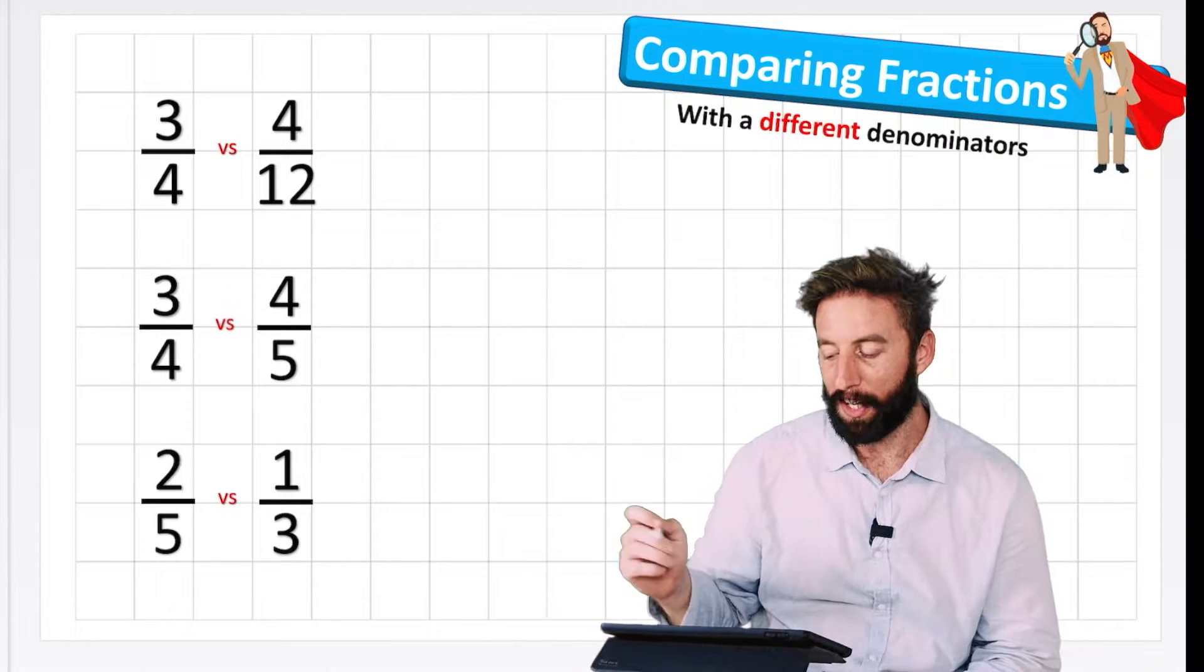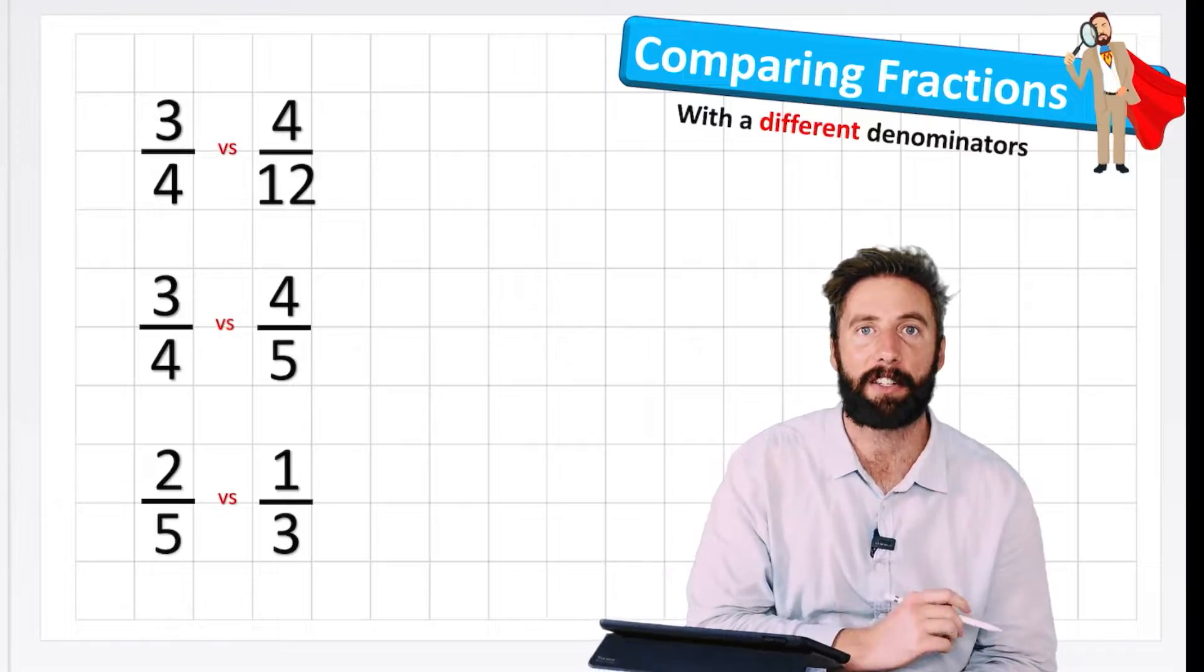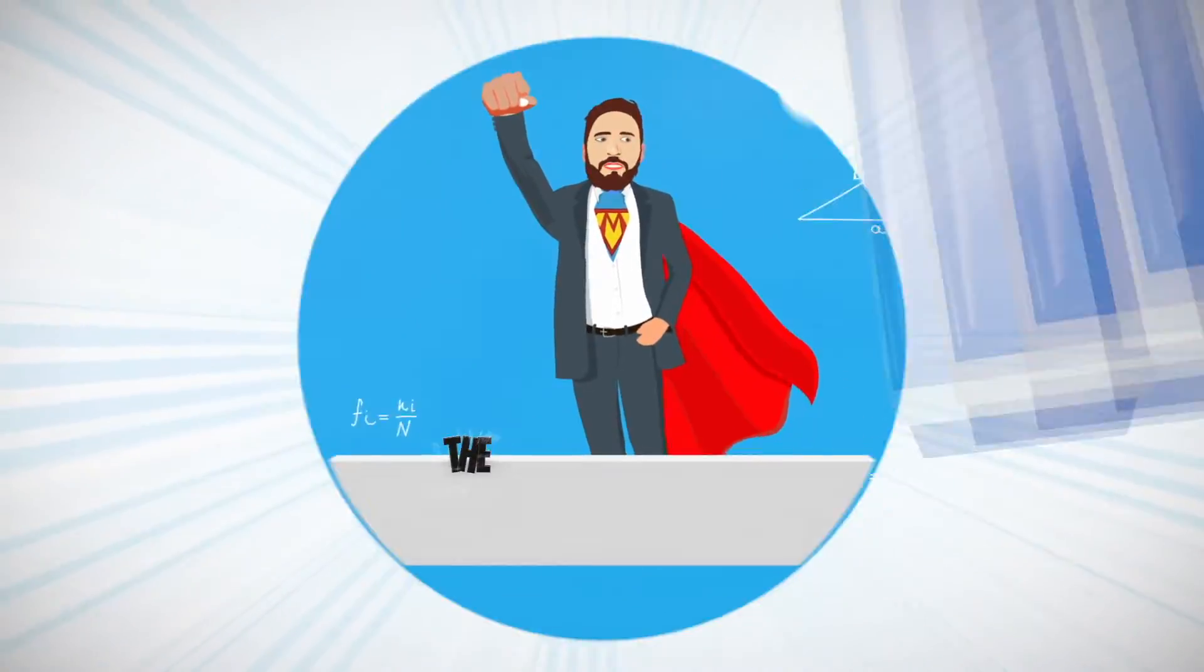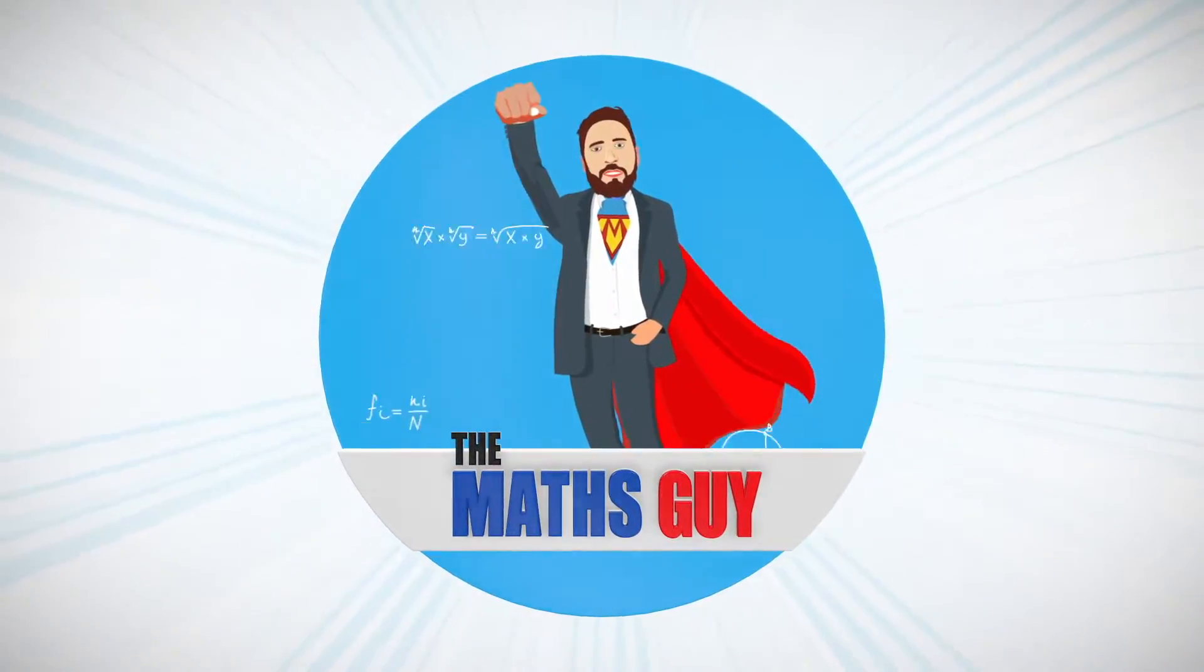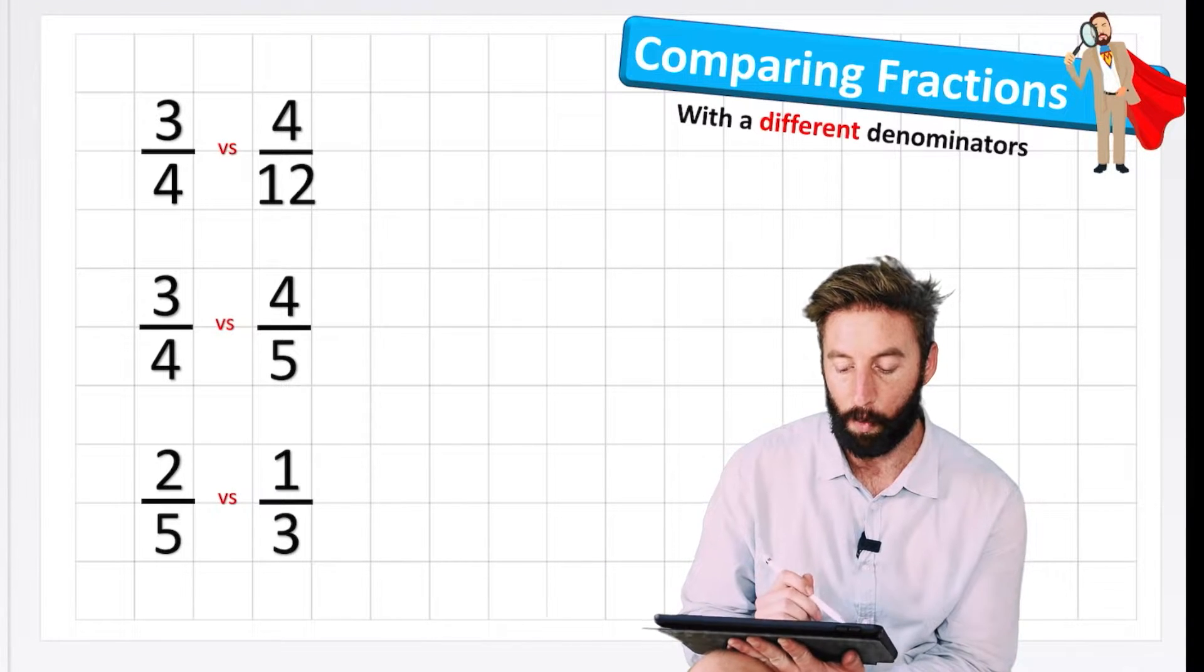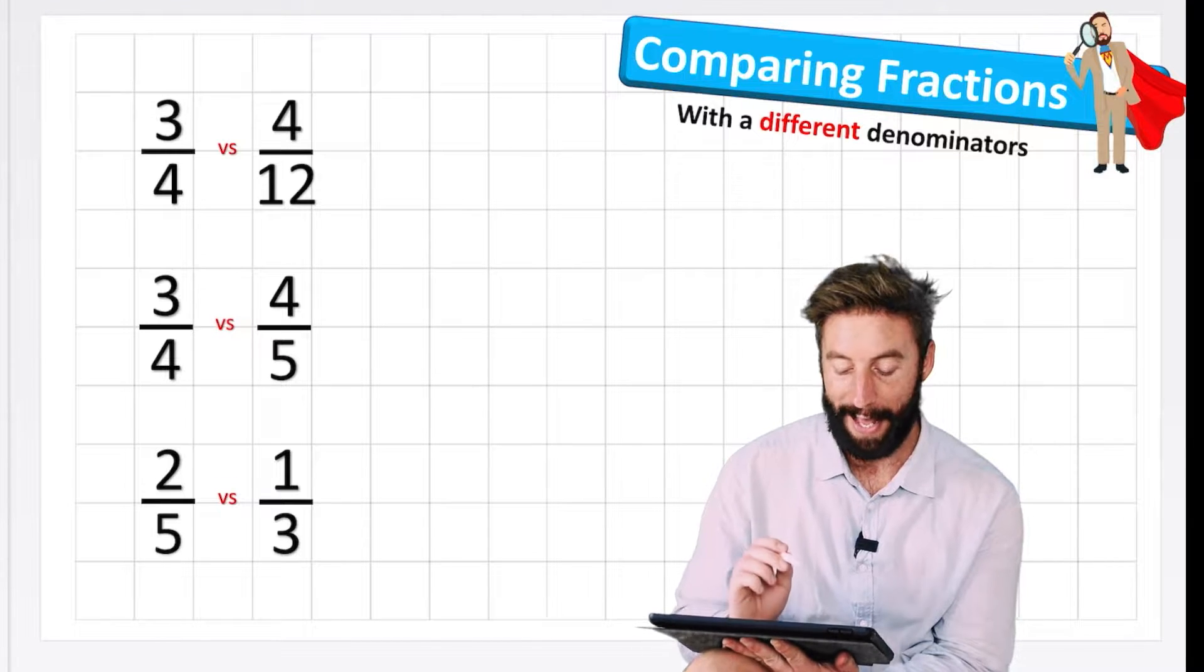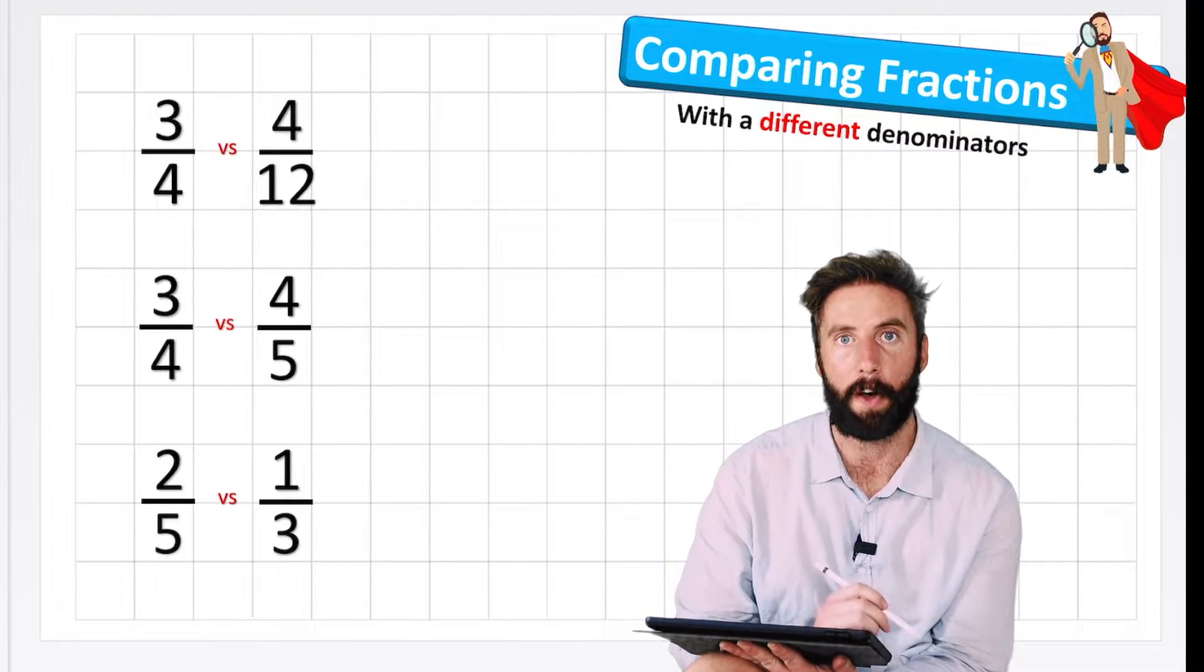Welcome back to The Maths Guy, everyone. Today's lesson is comparing fractions with different denominators. Let's start. Okay, so today we're going to be working on these three questions here: three quarters versus four twelfths, three quarters versus four fifths, and two fifths versus one third.